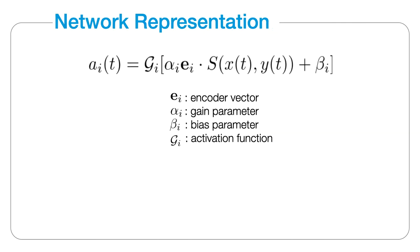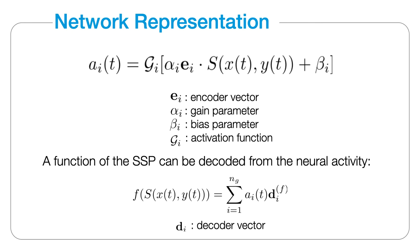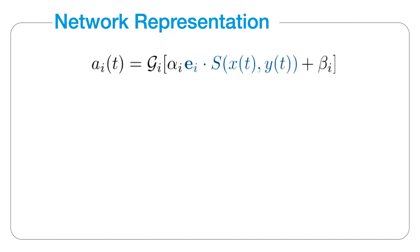A spatial semantic pointer can be represented by the collective activity of a neural population using the NEF. The activity of a single neuron, labeled i, is given here. We use the population's activity to decode what the population represents, or to decode a function of it. The optimal decoders can be found exactly. We can set the neurons' encoder vectors to be SSPs of random points, which are locations that the neurons are sensitive to.